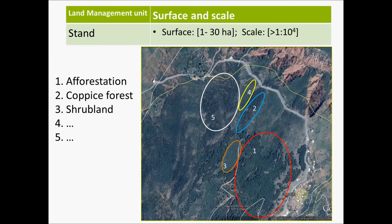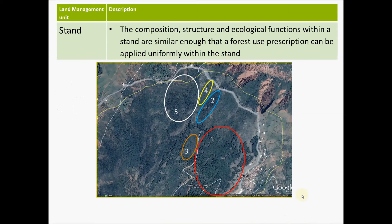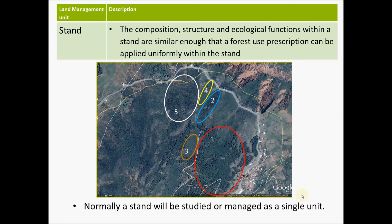Here we see: number one, an afforestation; two, a coppice forest; three, shrubland; etc. The composition, structure and ecological functions within a stand are similar enough that the forest use prescription can be applied uniformly within the stand. Normally a stand will be studied or managed as a single unit.